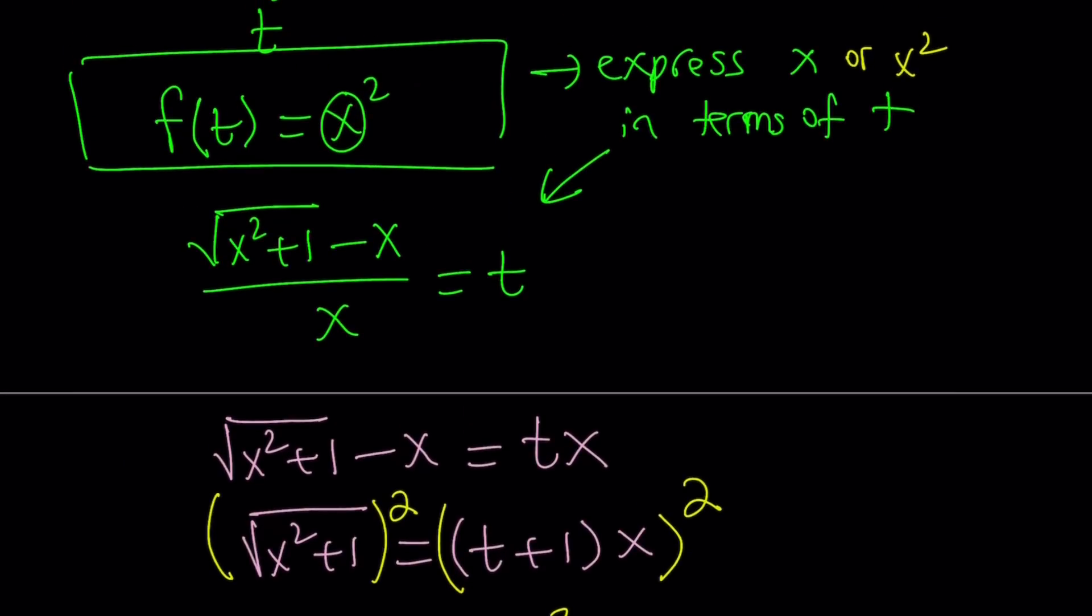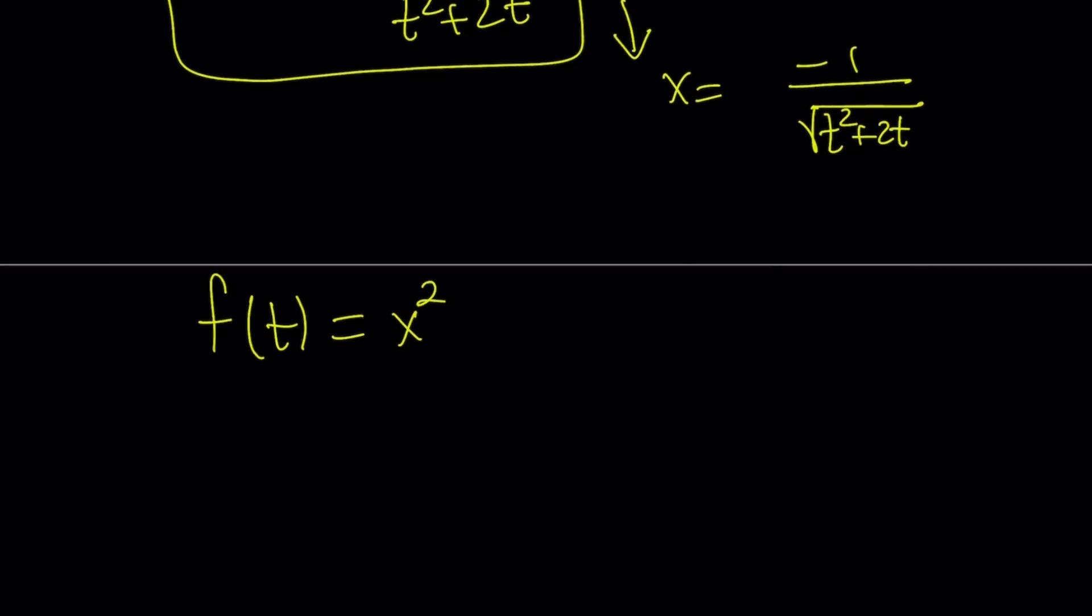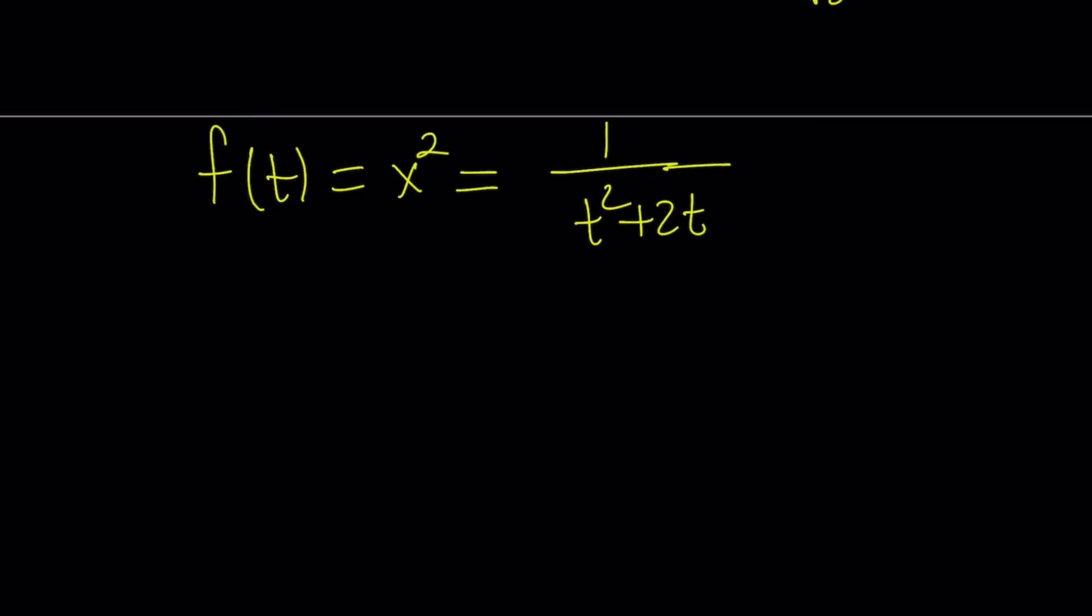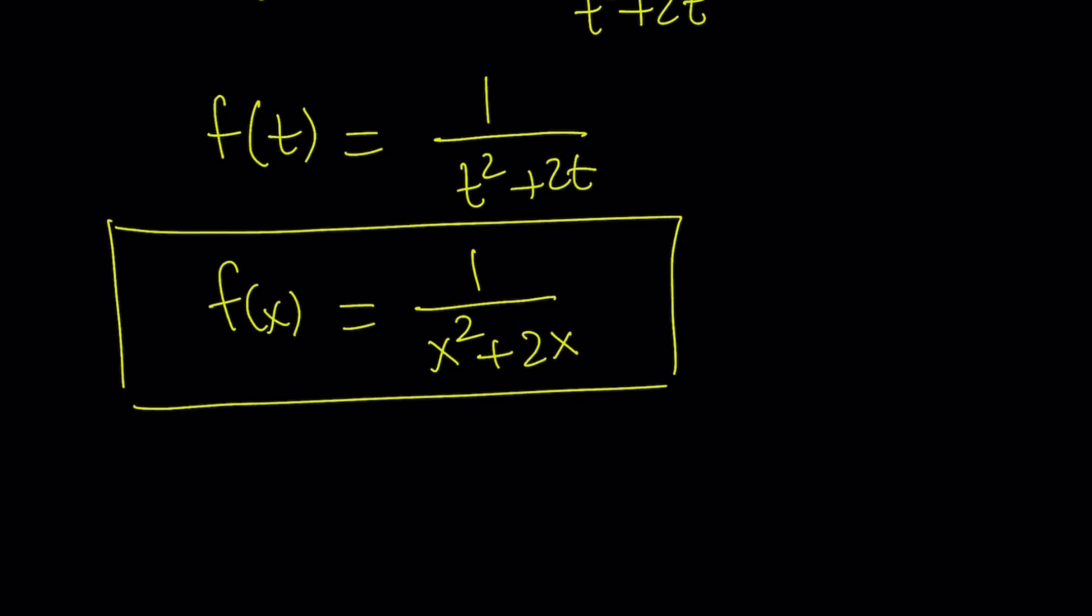Let's use this. Remember, I already had f of t equals x squared. We know that x squared equals 1 over t squared plus 2t. So f of t equals 1 over t squared plus 2t. And our goal was to find f of x, so you can basically just replace t with x. It's not the same x that we started with, this is just a different x, but it doesn't matter. So our function f of x in general can be expressed as 1 over x squared plus 2x, which is obviously undefined at 0 and undefined at negative 2. So those x values should be excluded, but other than that x can be anything.